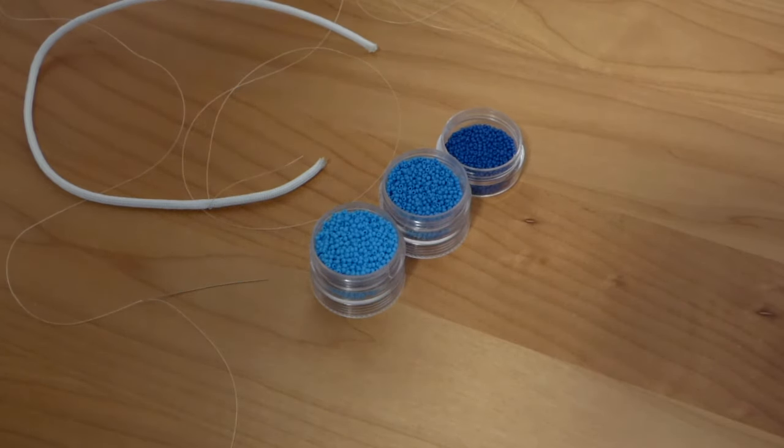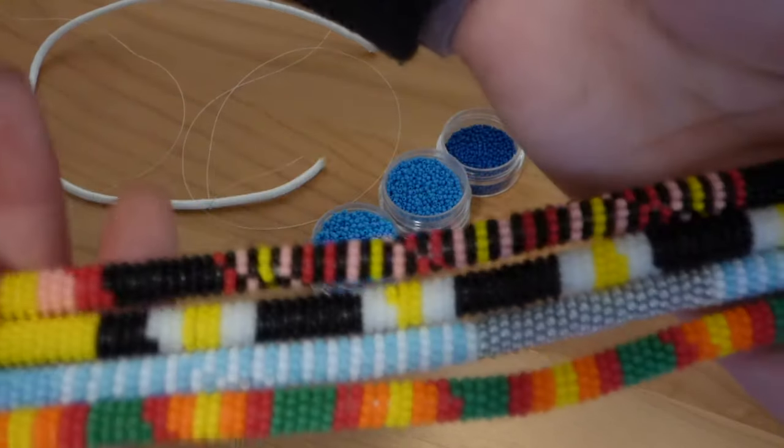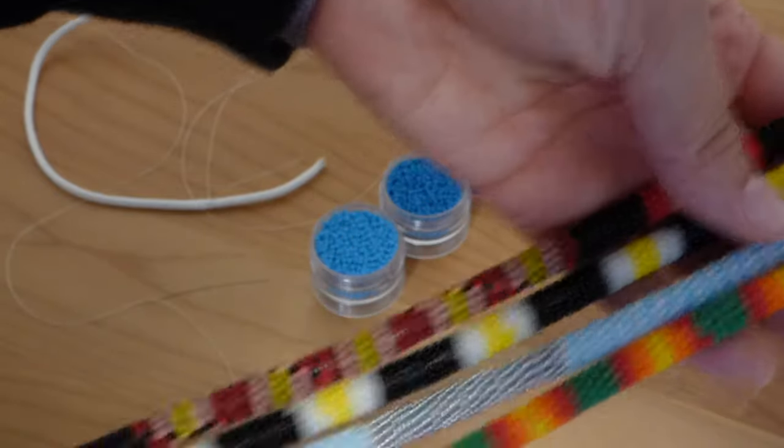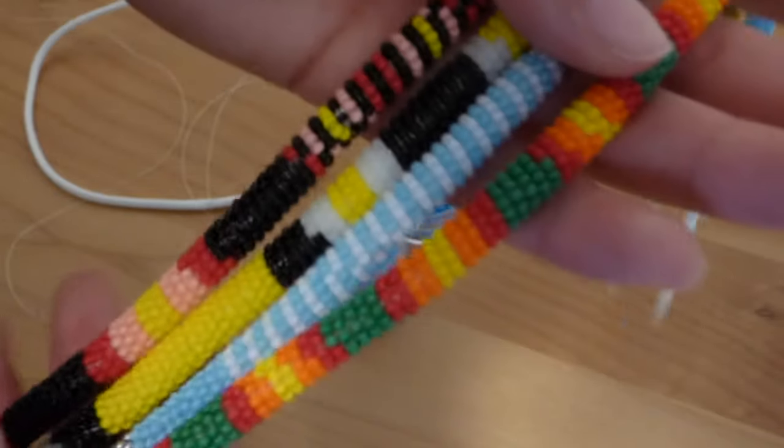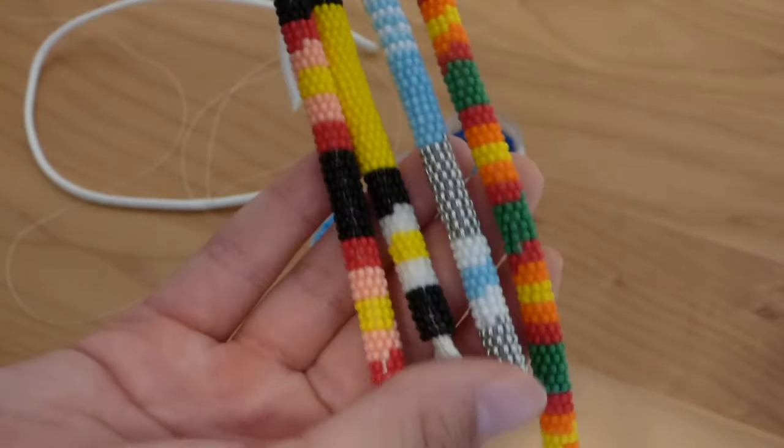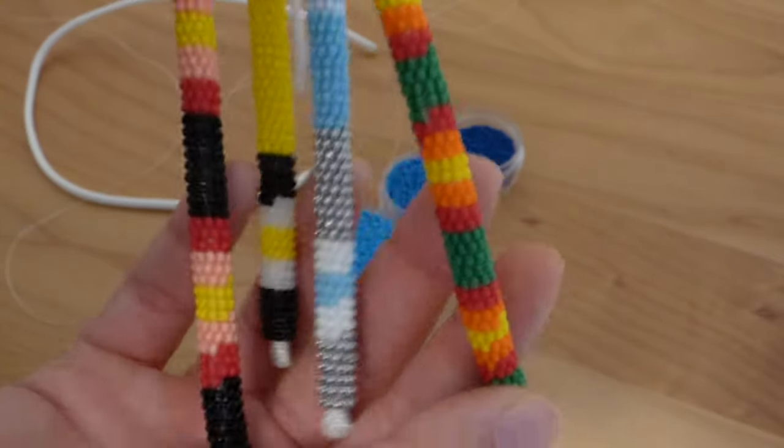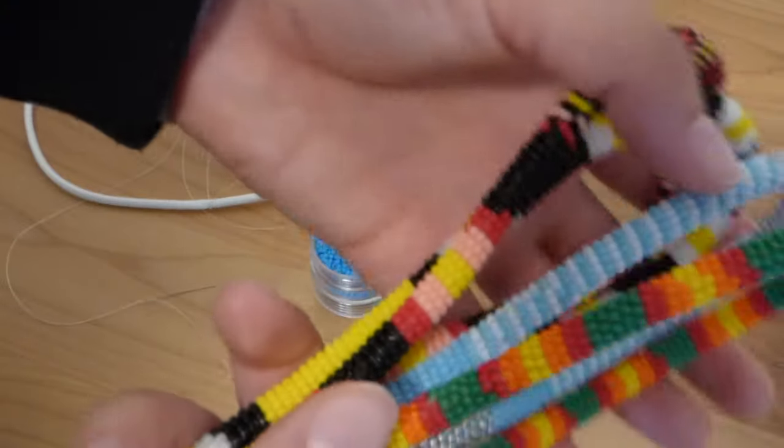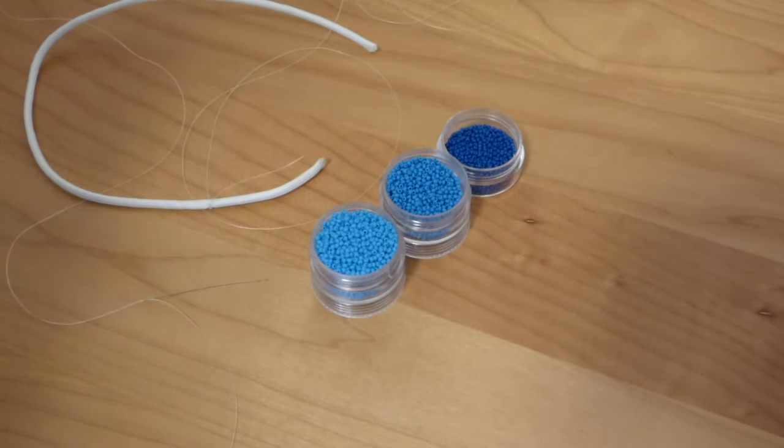So here are just some examples of bracelets that I've been working on, some different colors. And as you can see, you can do stripes, you can do sections of individual colors. It's really whatever your preference is. This one in particular, because I'm using different shades of blue, it's going to kind of look ombre.